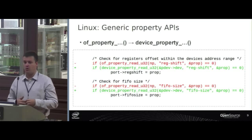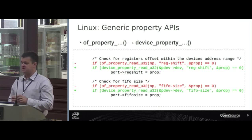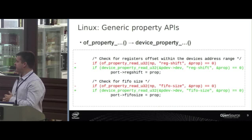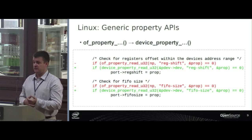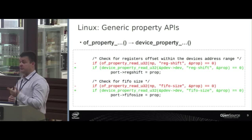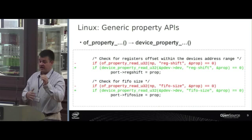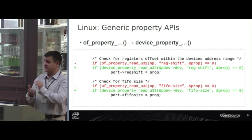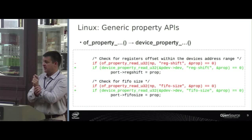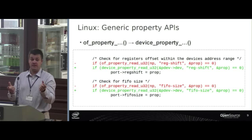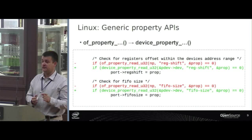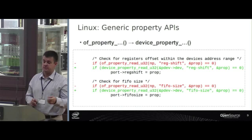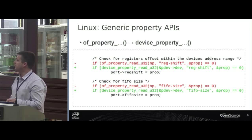That solves one part of the problem — you can now have those properties on an ACPI-discovered device. But for now, you still need to have a new device ID in ACPI. In the olden days, for every possible permutation of a device with different register shifts, different FIFO sizes, et cetera, you needed a completely different hardware ID because that was all you could do. But at least now you can have a single hardware ID and the definition of properties goes with the hardware ID, much as it does with the compatible string — called the binding in the OpenFirmware world.